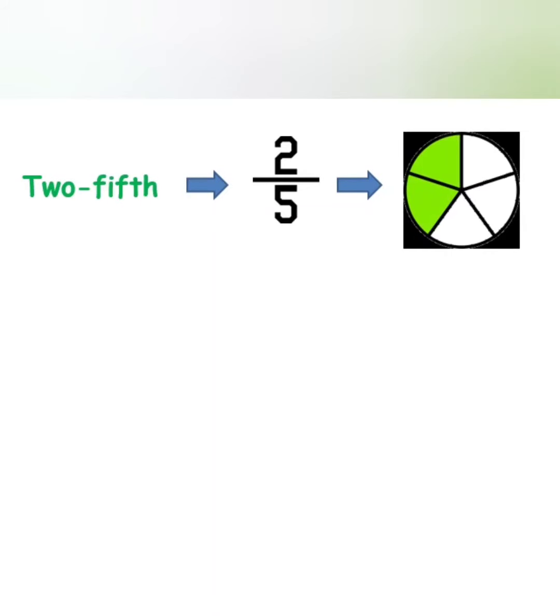And if we draw the meaning of 2 out of 5, it means this. You have one object as a whole, then you divide that object into 5 parts and shade 2 parts of 5 parts.